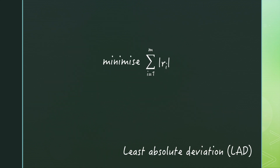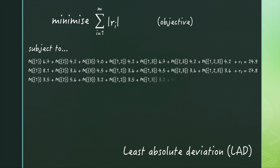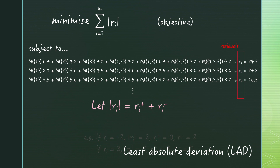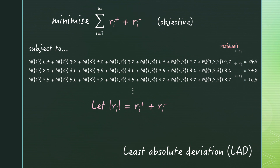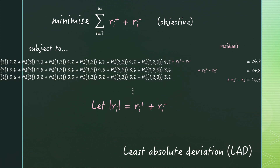We then need to transform the objective, which currently uses absolute values, to a sum of unrestricted variables. We do this by splitting each residual into two values — its positive and negative parts. When we solve for the minimum, one of these values in each pair will be zero. When setting up this linear programming problem, we're actually introducing two new decision variables for every observation we have.